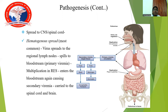First the virus spreads to the regional lymph nodes, then to the bloodstream causing primary viremia. Multiplication takes place in the reticuloendothelial system, then it enters the bloodstream again causing secondary viremia. From secondary viremia it is carried to the spinal cord and brain.